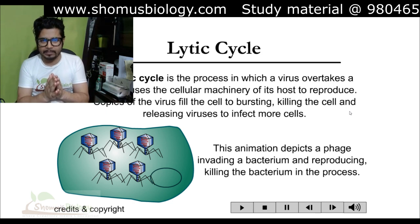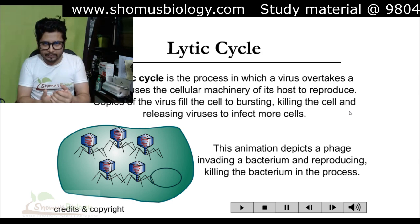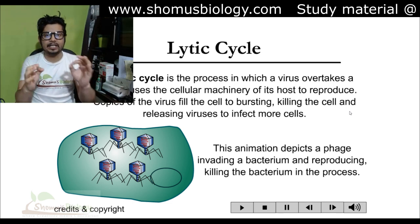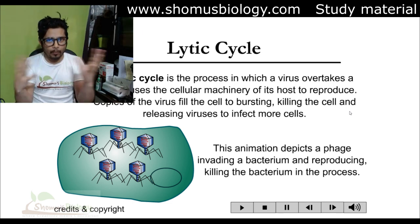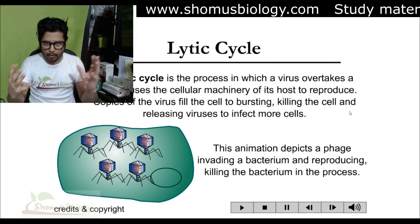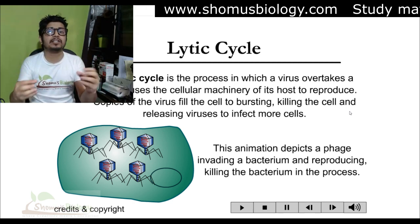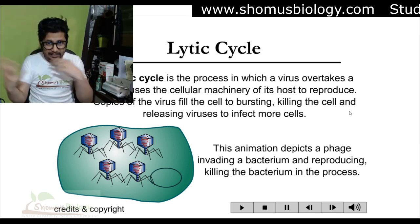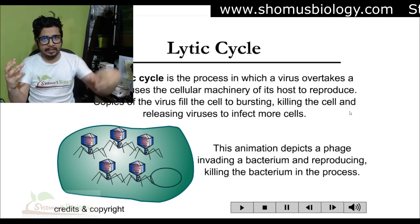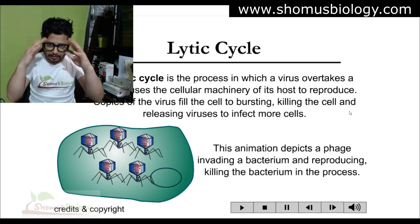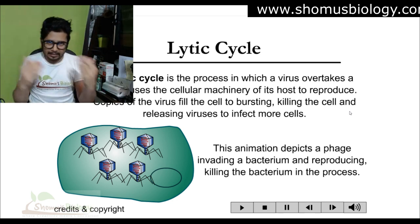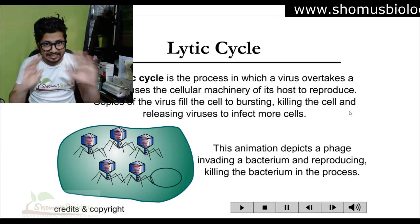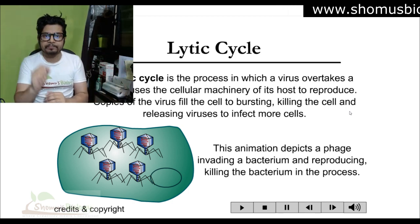Once lambda starts growing inside E. coli through repeated division, the process eventually causes the cell to burst open. All the lambda phage particles — after assembling the genetic material and the protein coat — are packaged and then released as the cell is lysed. That is how the whole lytic process is completed.